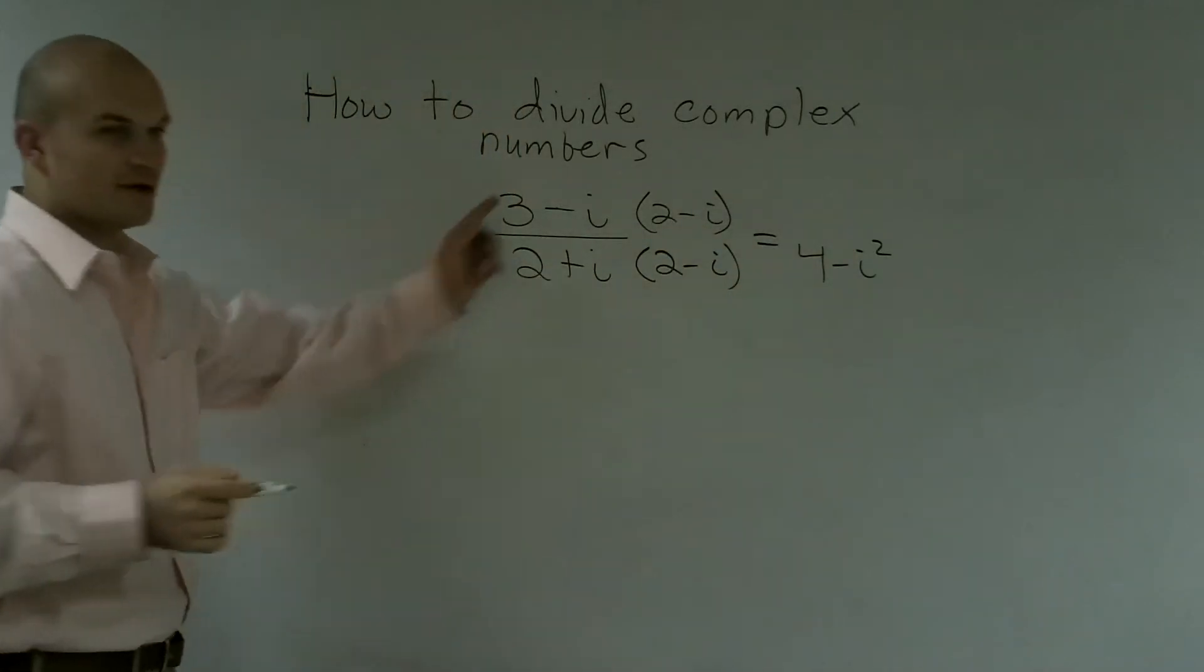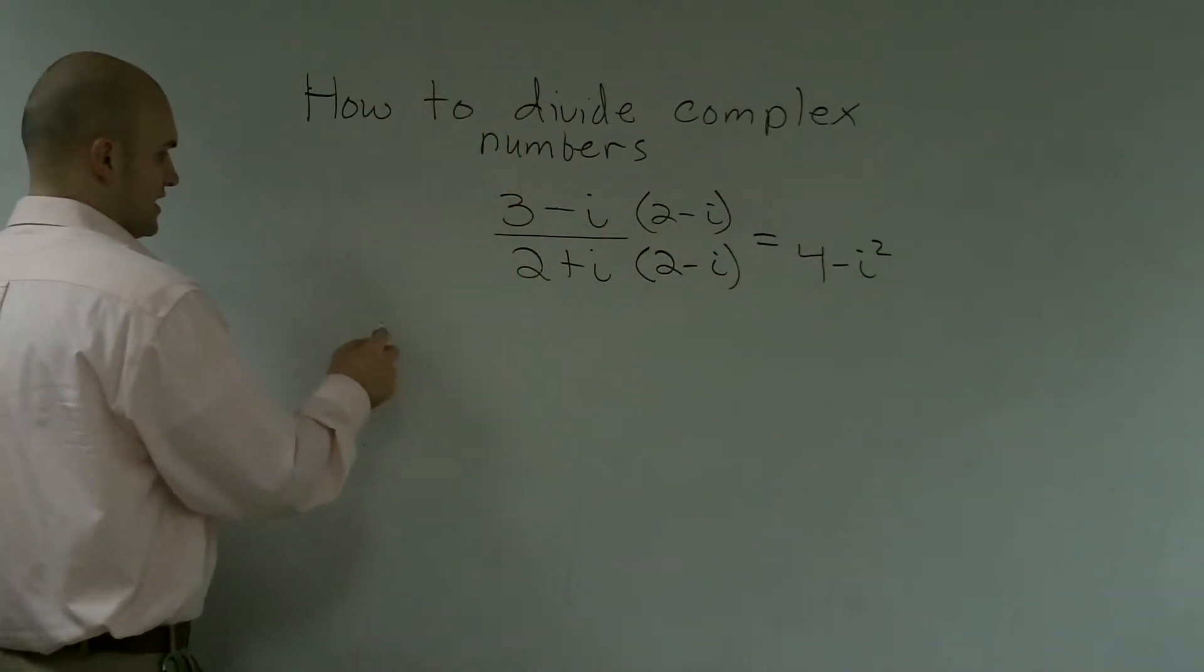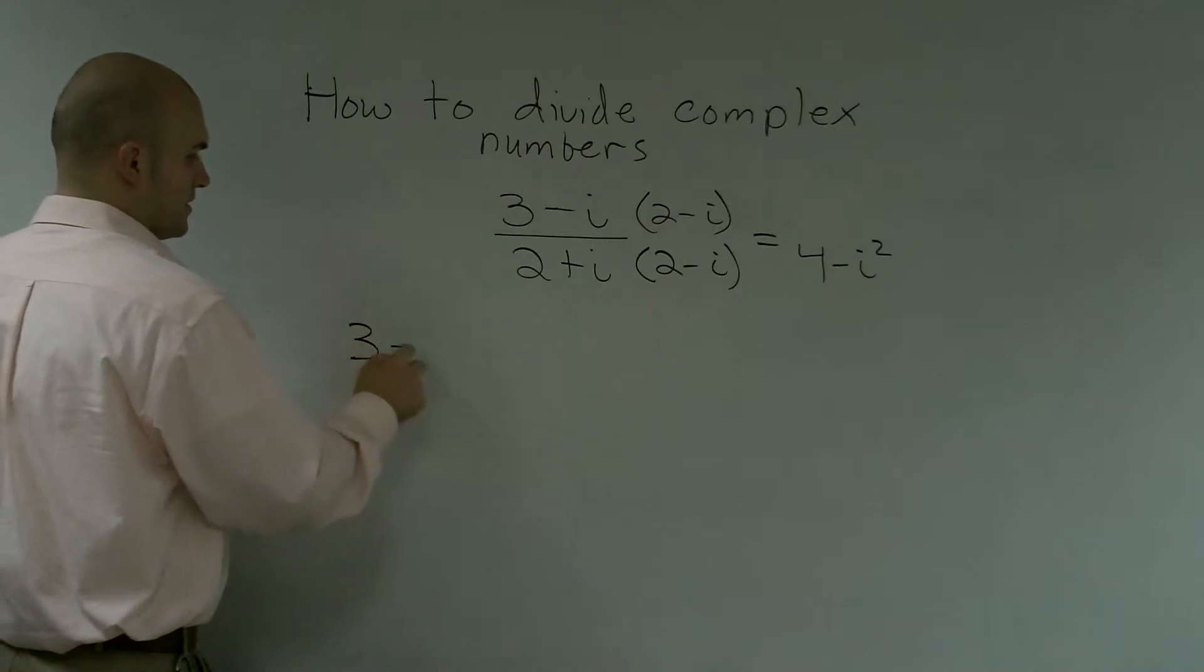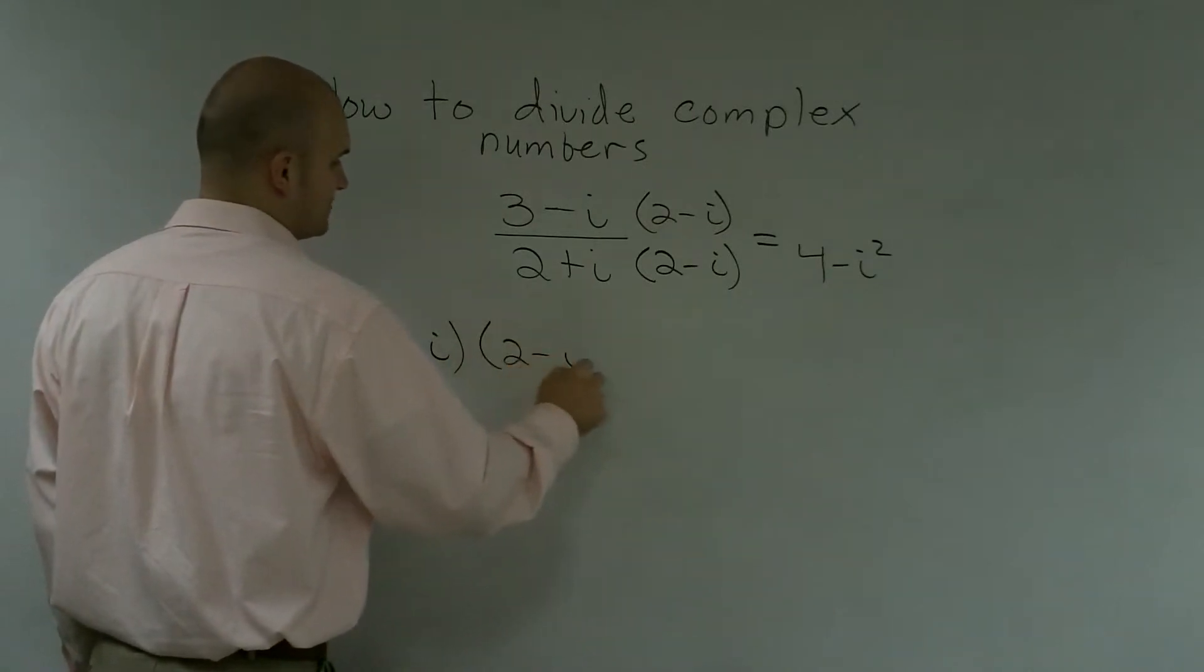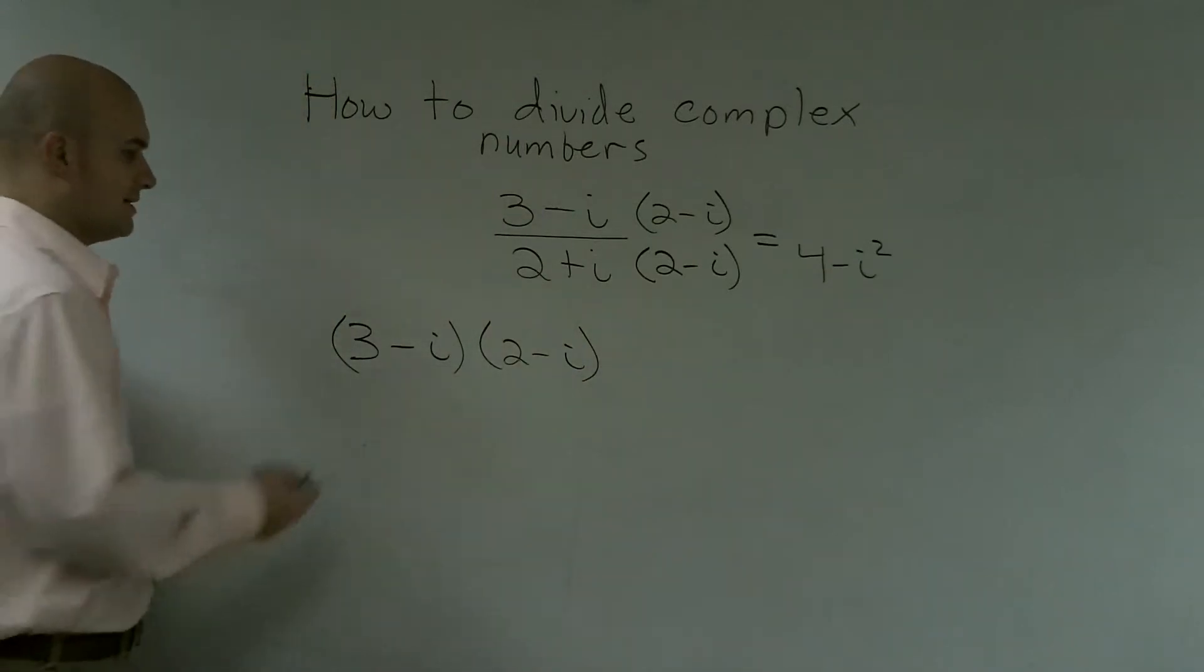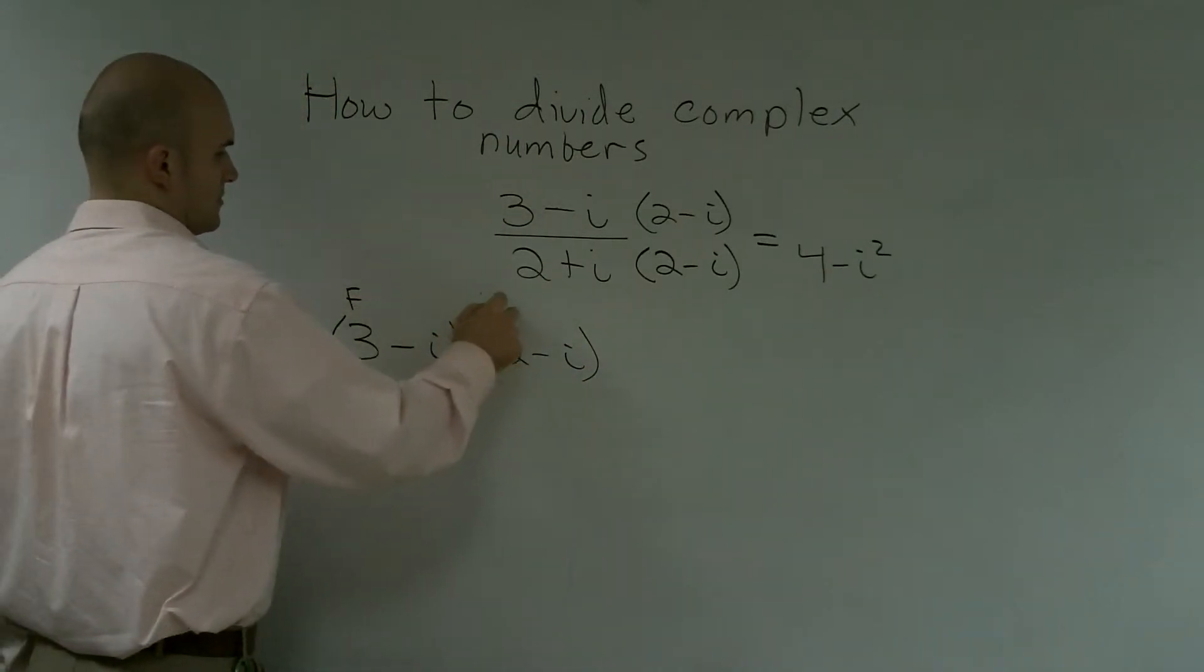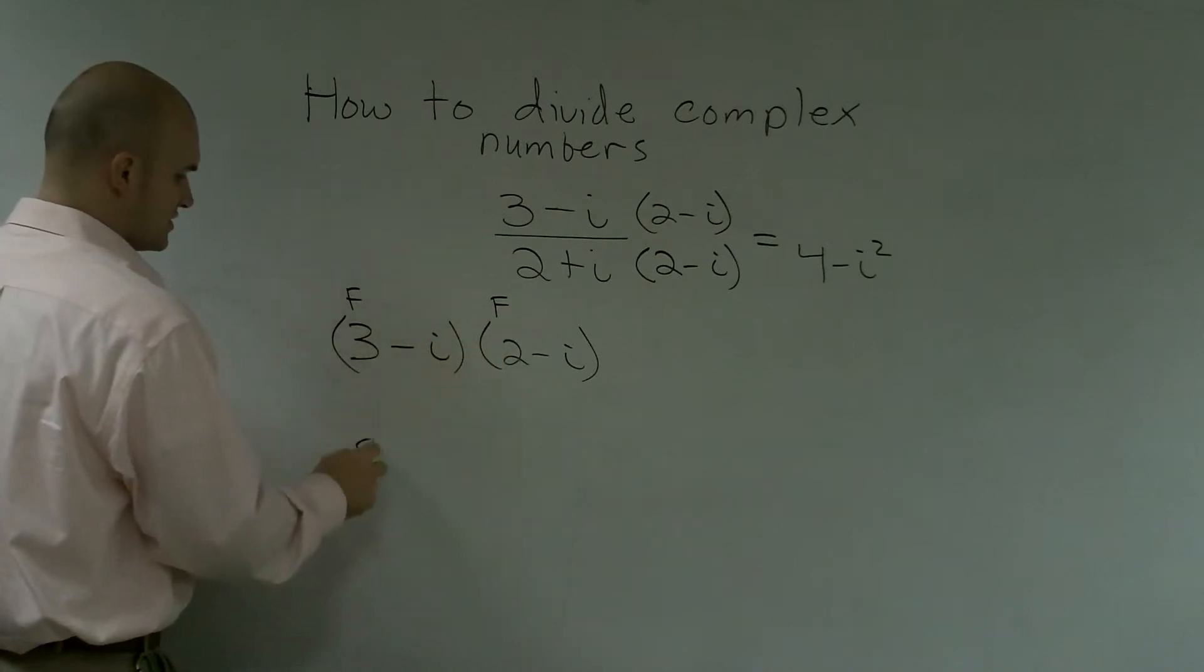And then to multiply on top, I'm going to do foil for this, just to show you guys to make sure that we're doing this correctly. 3 minus i times 2 minus i. First, we'll do the foil method, which will be first. So 3 times 2, which is 6.